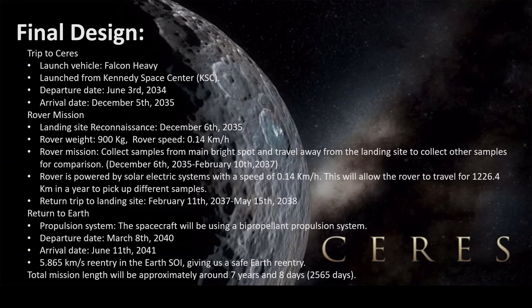Our rover mission would start at the landing site reconnaissance on December 6, 2035. The mass of the rover is 900 kilograms and the rover's speed is 0.14 kilometers per hour. The mission of the rover is to collect samples from the main bright spot and travel away from the landing site to collect other samples for comparison. This will go from December 6, 2035 to February 10, 2037. The rover is powered by solar or electric systems, allowing it to travel 1,226.4 kilometers in a year to pick up different samples. Then it will have a return trip to the landing site from February 11, 2037 to May 15, 2038.